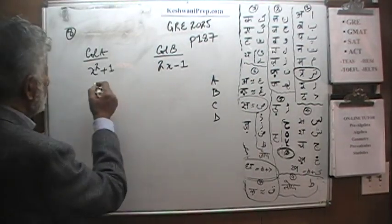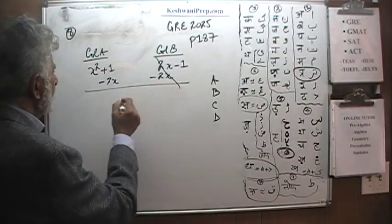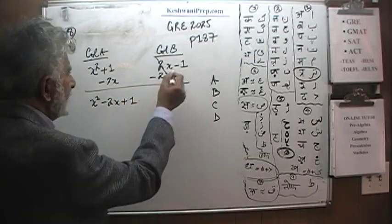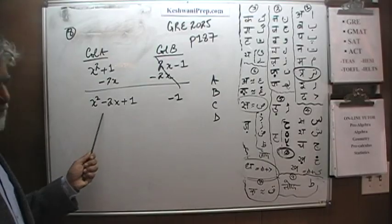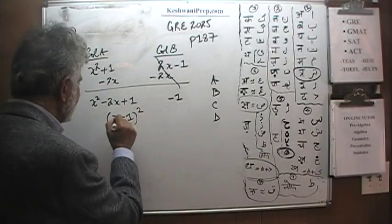Subtract 2x from both sides. What we end up here is, this is going to drop out, we end up with x squared minus 2x plus 1, and here we just end up with negative 1. I hope you are able to see that this is a perfect square, this is simply x minus 1 whole squared.